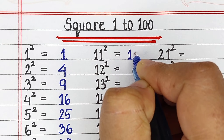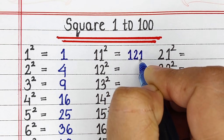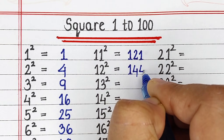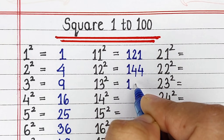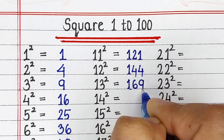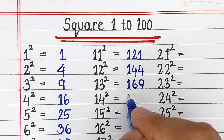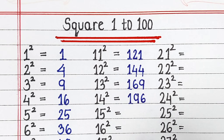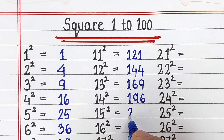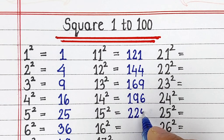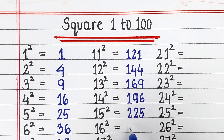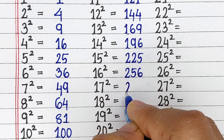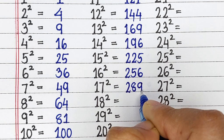Square of 11 is 121, square of 12 is 144, square of 13 is 169, square of 14 is 196, square of 15 is 225, square of 16 is 256, square of 17 is 289, square of 18 is 324.